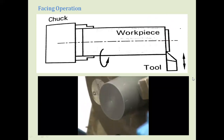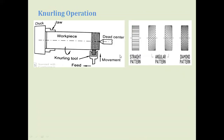Next is the knurling operation. In this operation there is a special knurling tool which, as it moves over a surface, develops a pattern. We need a grip for holding devices, and that grip is developed using a knurling tool that already has designs on it. Some designs are in the form of a straight pattern, some angled patterns, and some diamond patterns. These patterns are transferred to the rotating workpiece. During knurling, the machine speed is reduced compared to facing and turning.